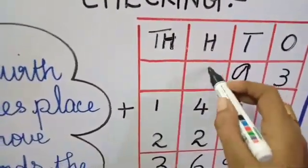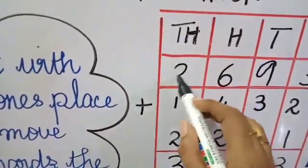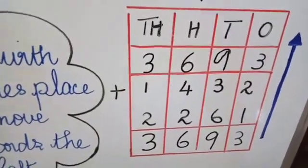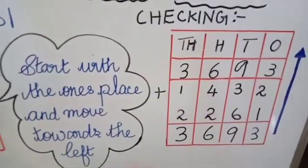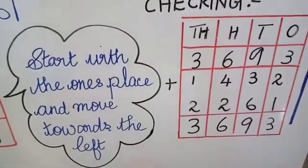And 2 plus 4 gives you 6. And finally, 2 plus 1 gives you 3. And you can find both the answers remain the same. And this is the procedure we follow to check the numbers using addition. Thank you, children.